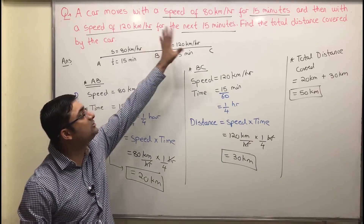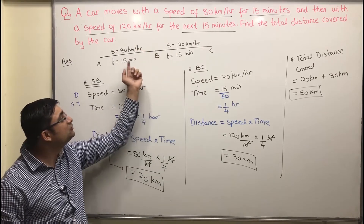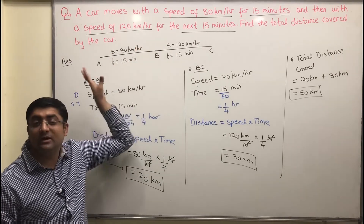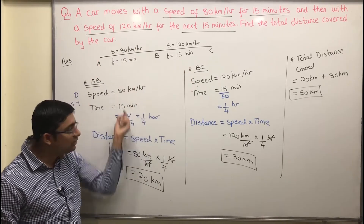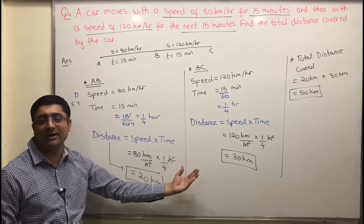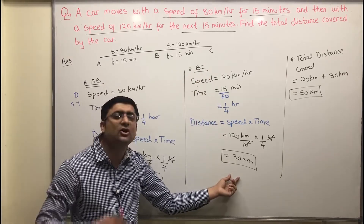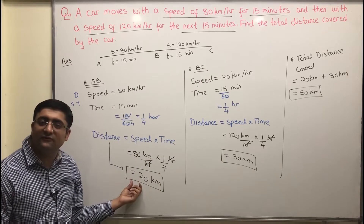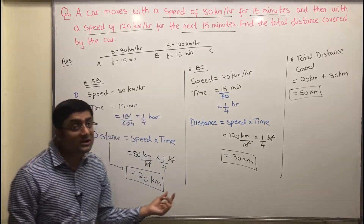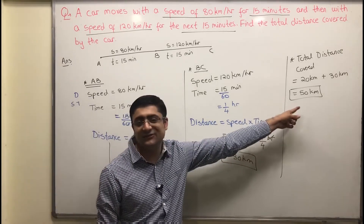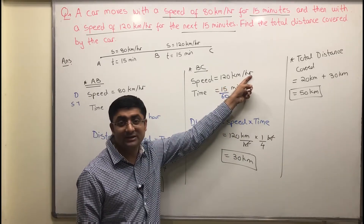Whenever you're given different parts of a journey — here we have two parts, each with a given speed and time — always draw a figure to visualize the problem. There are two parts: A to B and B to C. Solve for each part separately, then combine them. Distance from A to B is 20 kilometers, distance from B to C is 30 kilometers, so total distance covered is 50 kilometers.